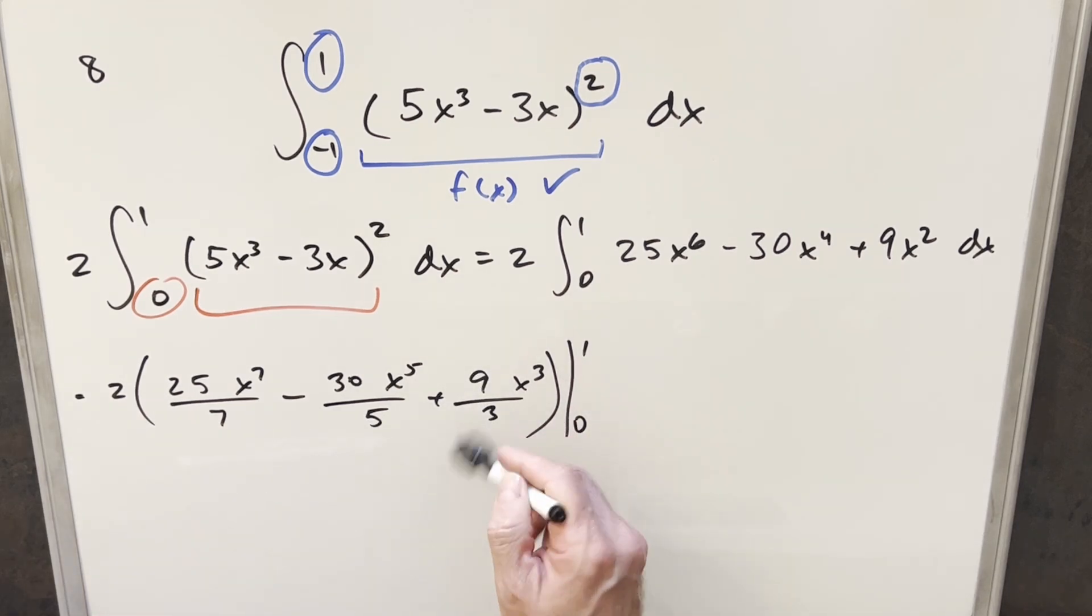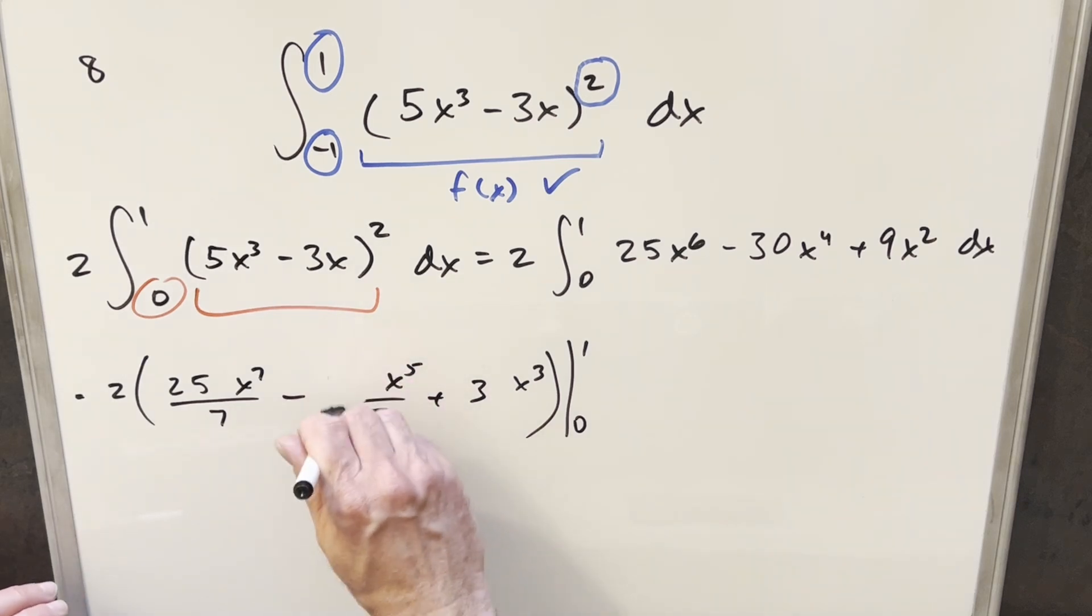Of course, I can reduce a few things. 9 over 3, I can write as 3. And 30 over 5, I can write as a 6. And now what we need to do is just evaluate this thing to finish it off.